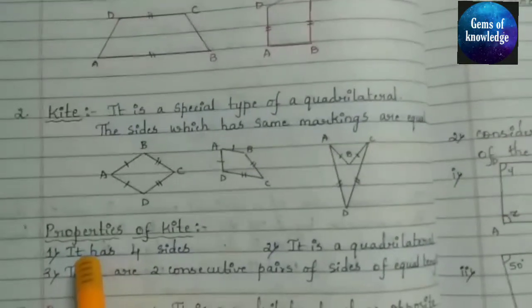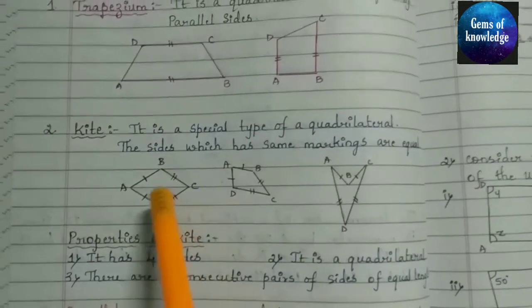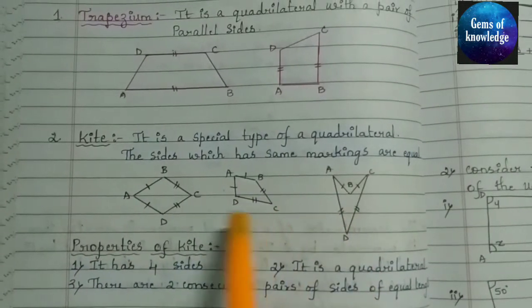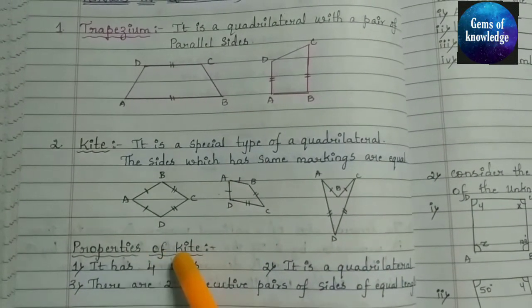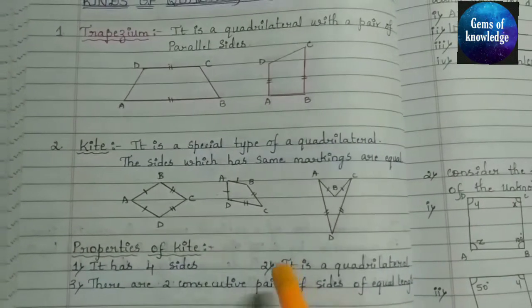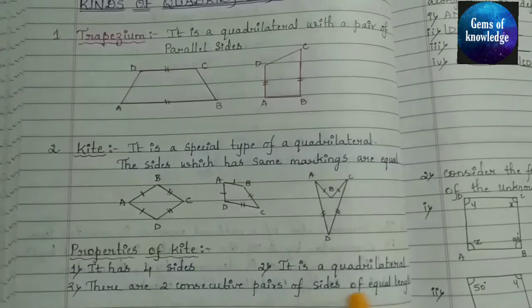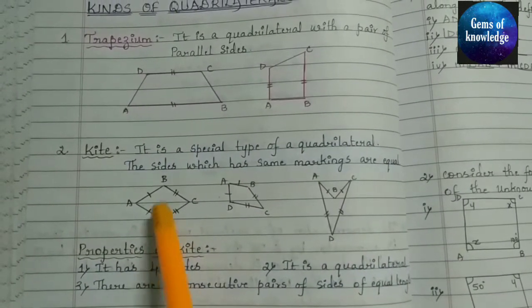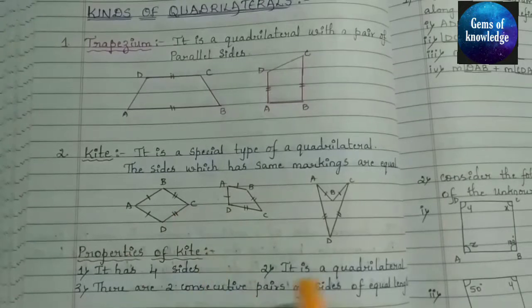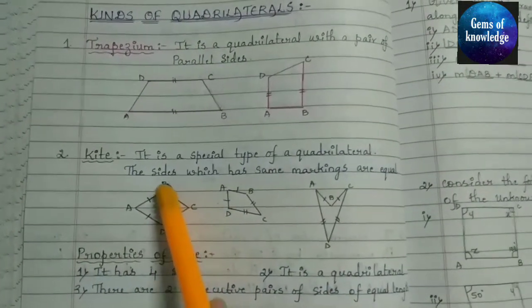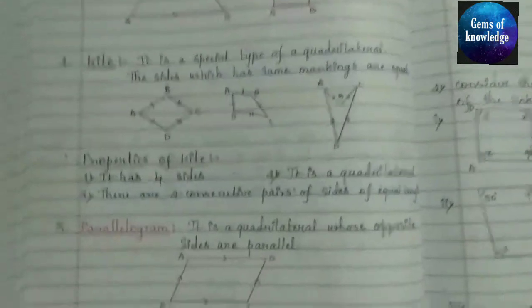Now let's look at the properties of a kite. First, it has four sides. Second, it is a quadrilateral. Third, there are two consecutive pairs of sides of equal length — consecutive meaning the very next side is of equal length. For example, CD equals BC, meaning the adjacent side has equal length.